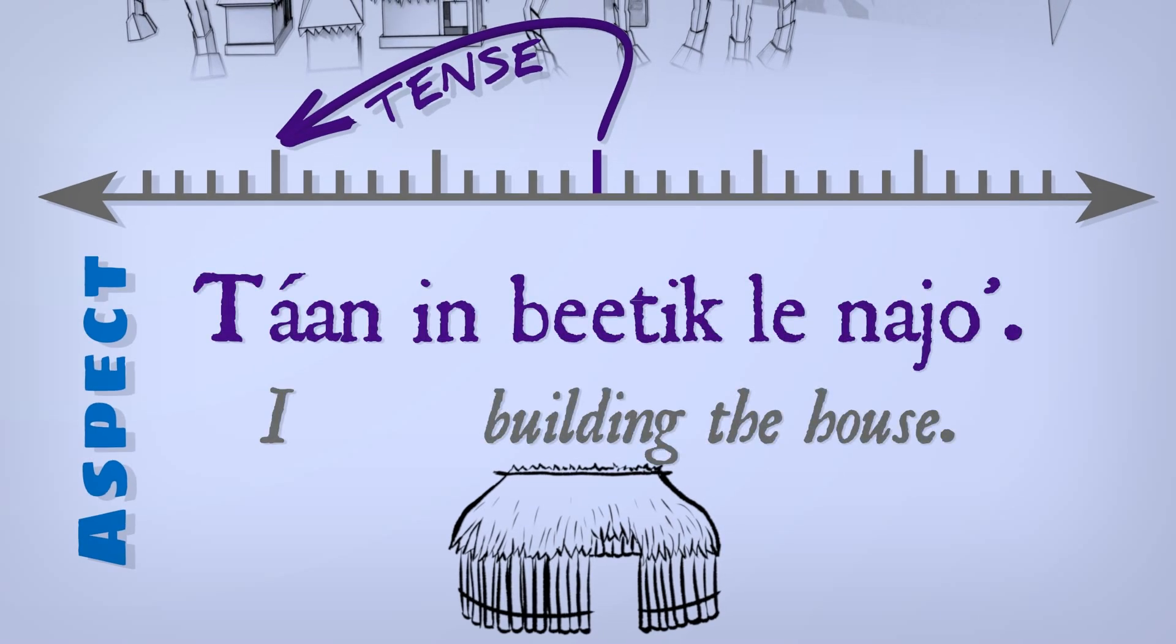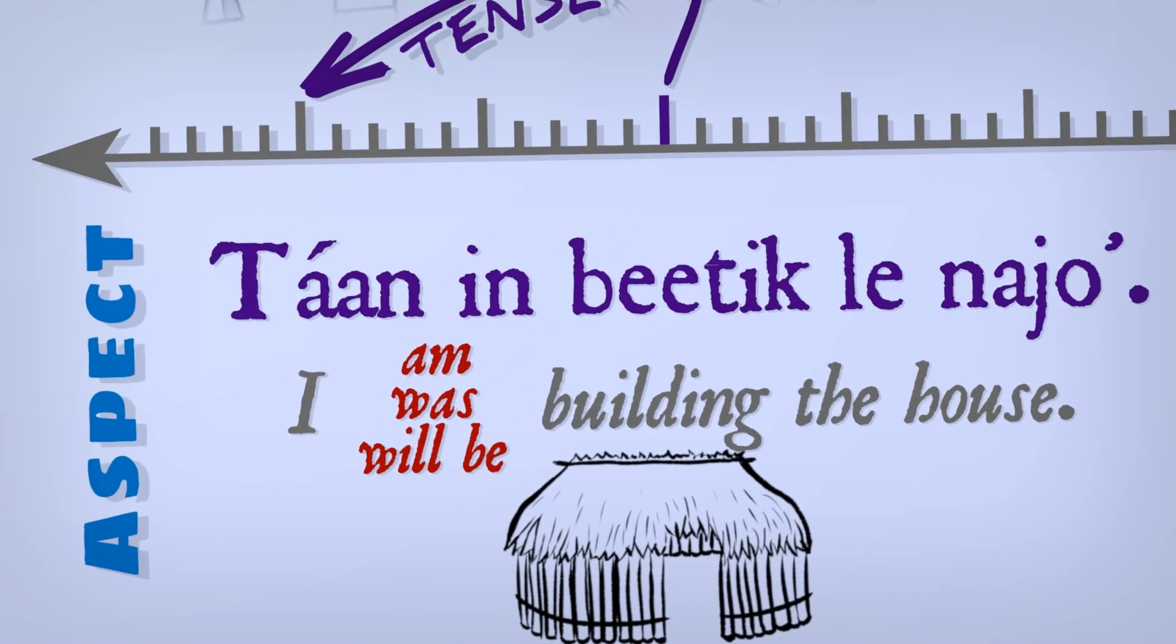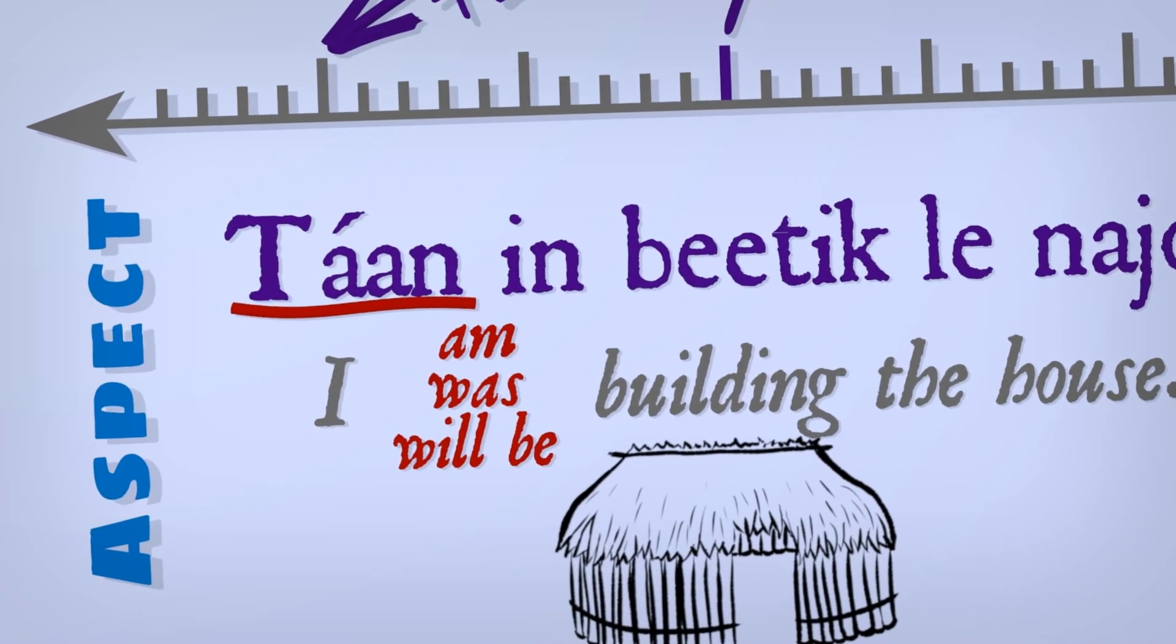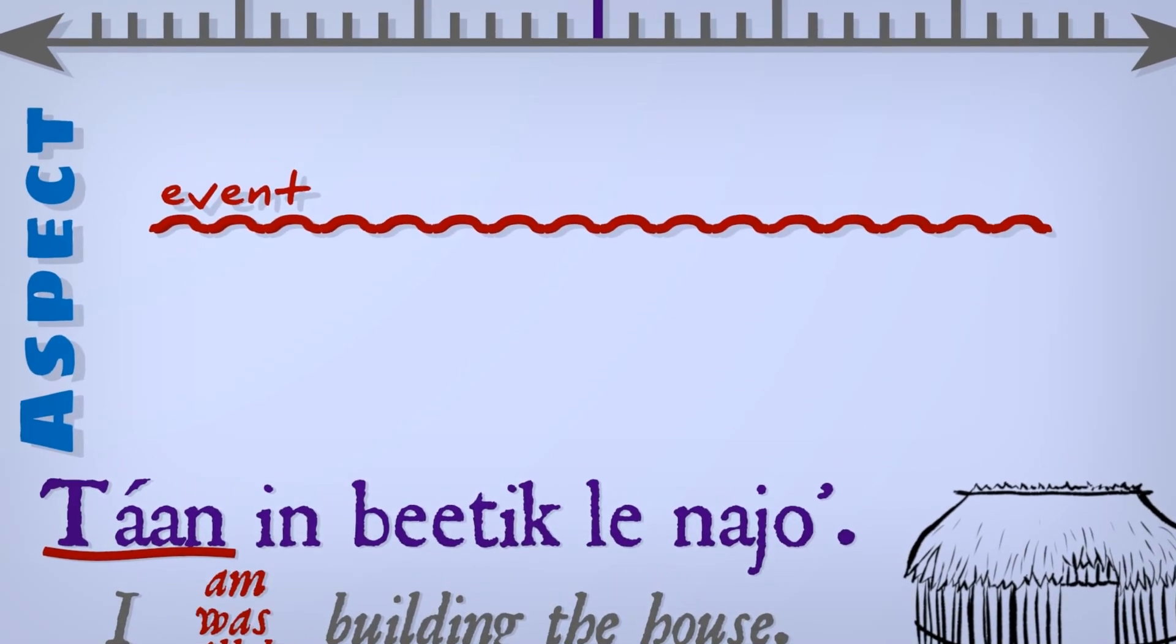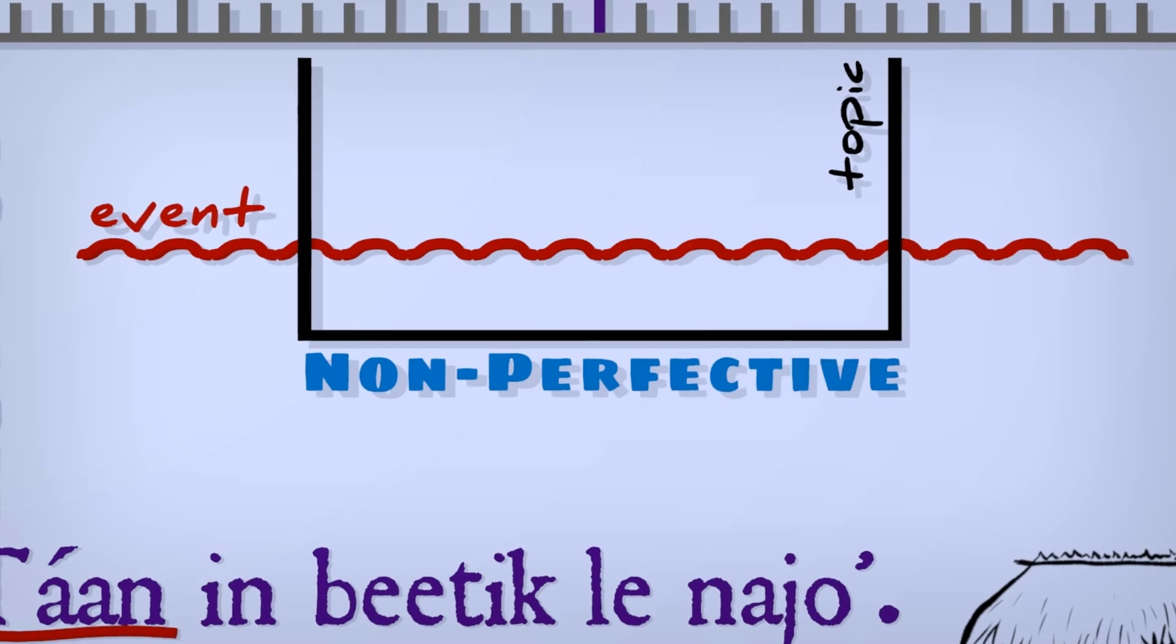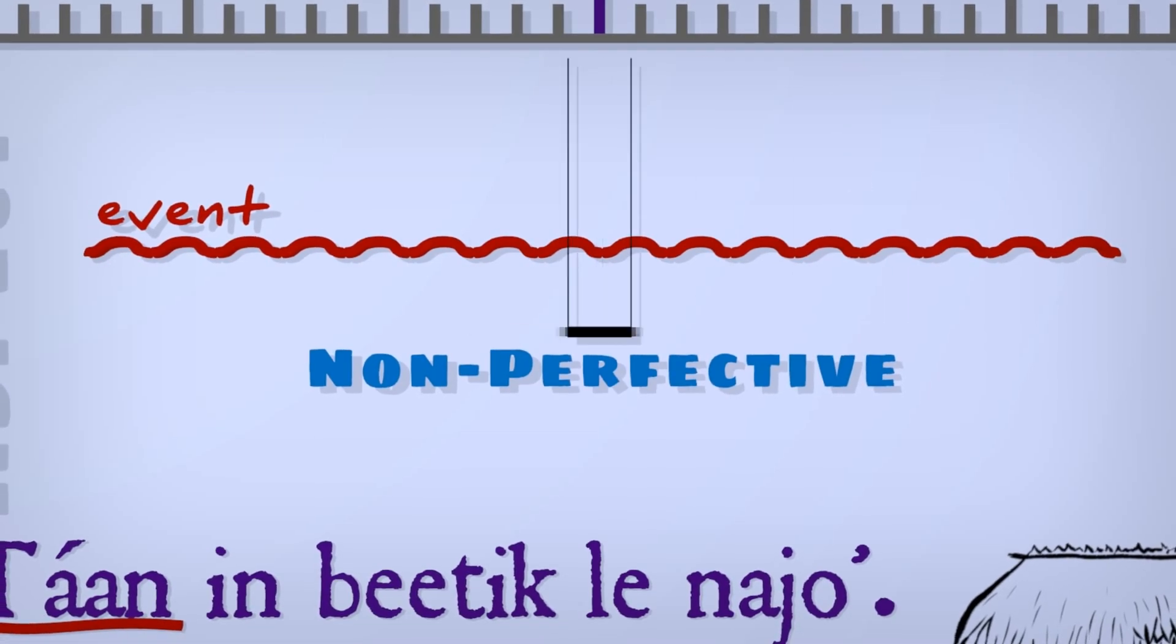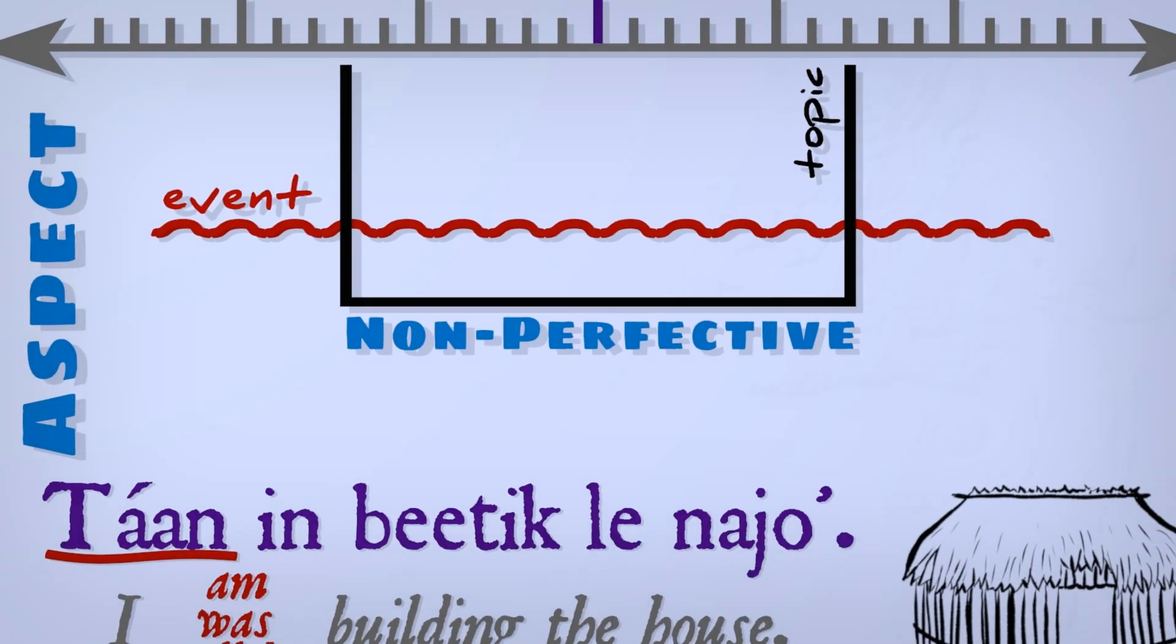Tan imbe tik lenaho. This could be happening at any time. But with this non-perfective aspect here, it slices into an event that's happening, putting the topic inside that event. This ongoing topic feels unattached, like it's in search of some nearby reference point to chain itself too.